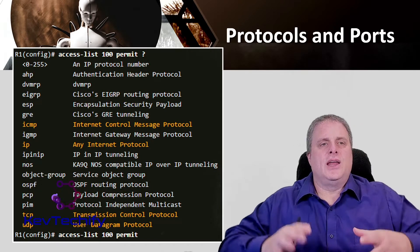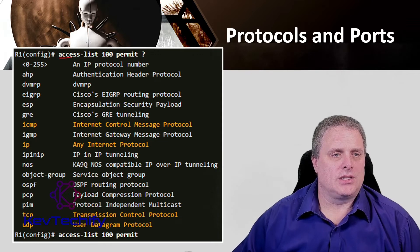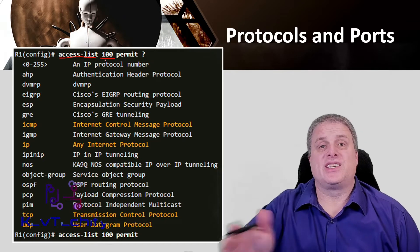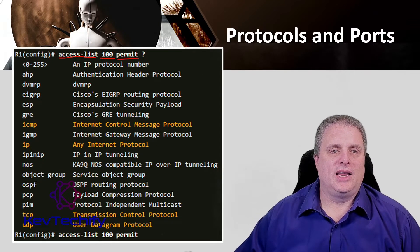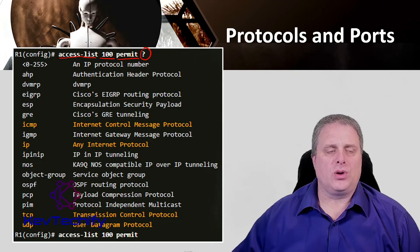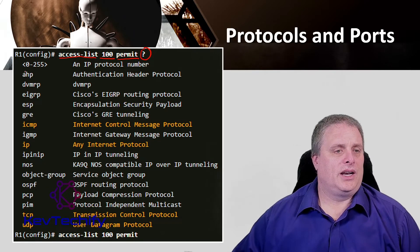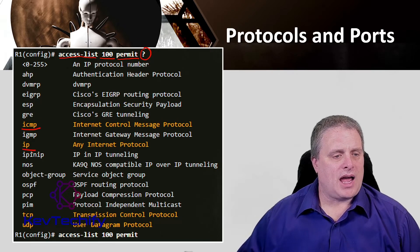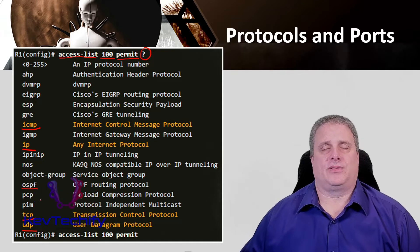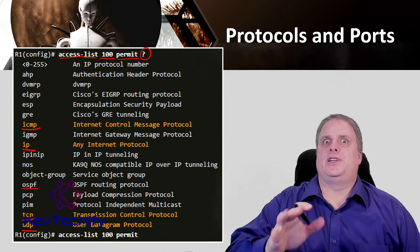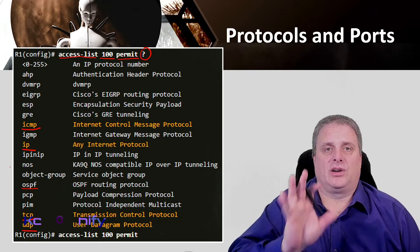To see the different protocols that an extended ACL can analyze, from global configuration mode type: access-list, a number in the extended range (100 to 199 or 2000 to 2699), then permit or deny, then a space and a question mark. It will list out all the protocols this extended ACL can filter on. We can see it has ICMP, IP, TCP, UDP — those are the common ones — but we can also get into protocols like OSPF. There's a lot of very granular control available.